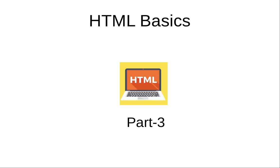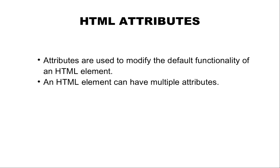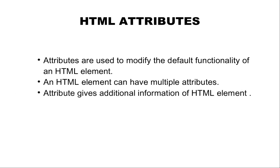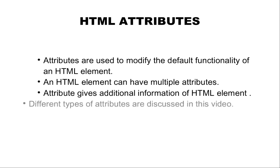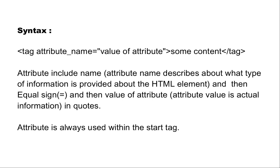Hello guys, welcome to my YouTube channel. In this video we will discuss HTML attributes. Attributes are used to modify the default functionality of an HTML element. An HTML element can have multiple attributes. Attributes give additional information about an HTML element. We will also discuss how to add multiple attributes for a single HTML element. The syntax of an attribute is: open the tag, then attribute name, equal symbol, then value of attribute in quotes, then some content, then close the tag. The attribute name describes the type of information provided about the HTML element, and the value is the actual information. An attribute is always used within the start tag.